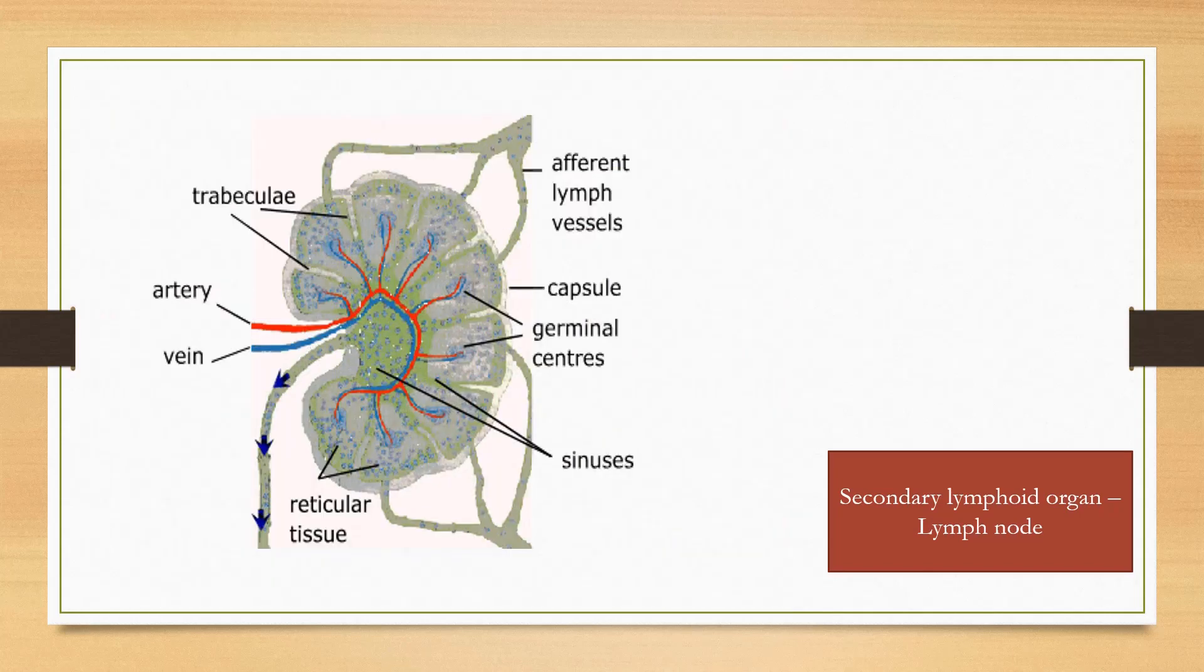Antigen from the tissues is carried by afferent lymphatic vessel to the lymph node. Dendritic cells and phagocytic cells process the antigen which activates lymphocytes in the paracortex region. Activated lymphocytes migrate to the primary follicle of the cortex.